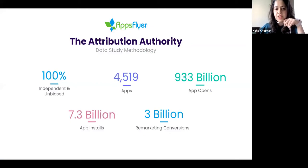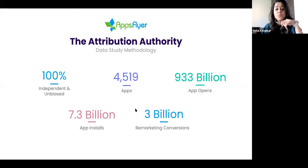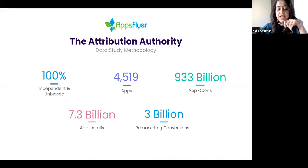The methodology we used to put together these insights: AppsFlyer, being an attribution authority, is 100% independent and unbiased. Because of that, we are able to put together some great numbers on what the app ecosystem in India looks like. We have put together data over 4.5K apps, looking at 933 billion app opens and over 7.3 billion app installs for these insights. So let's jump right in.